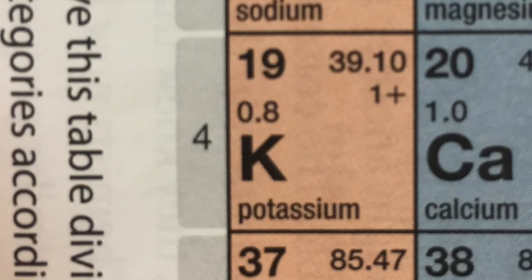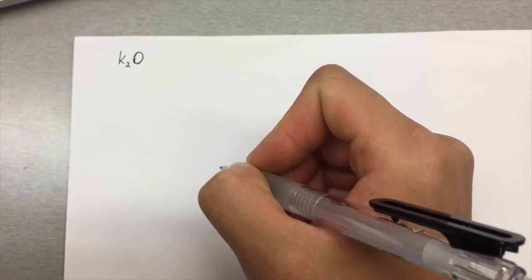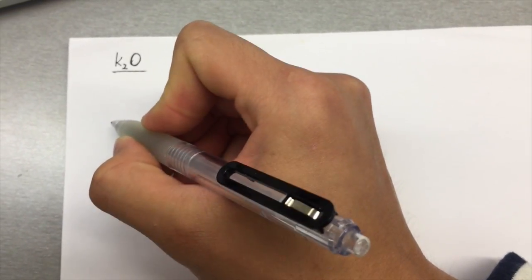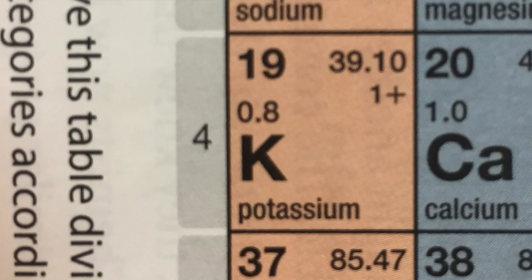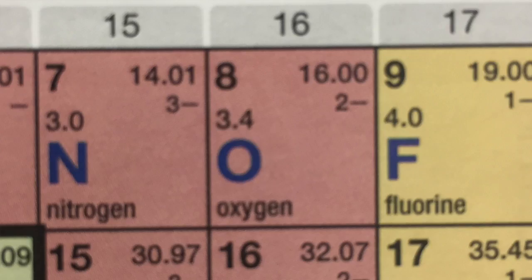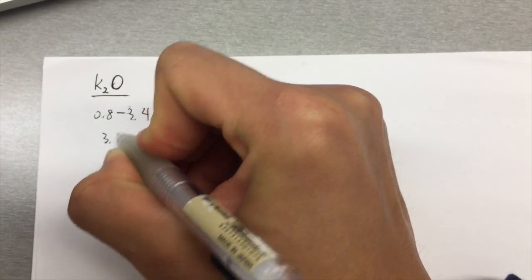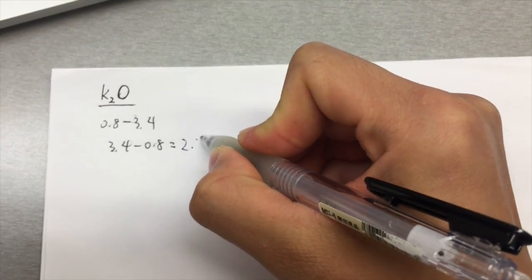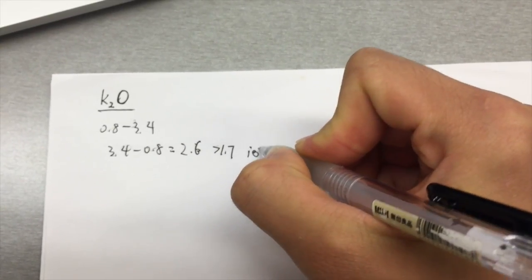Let's look at an example: potassium oxide. It's an ionic compound. Let's see why — the electronegativity of potassium is 0.8 and oxygen is 3.4. The difference is 2.6, which is larger than 1.7, so it's an ionic compound.